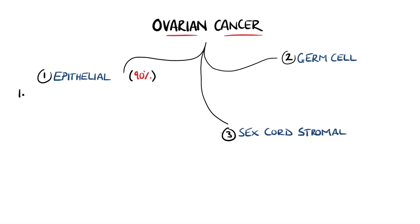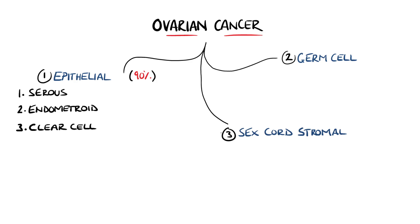Within epithelial ovarian cancer, there are also further types. These are serous, which is the most common, endometrioid, clear cell, mucinous, and undifferentiated or unclassified.